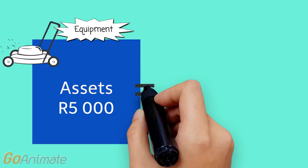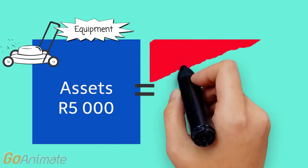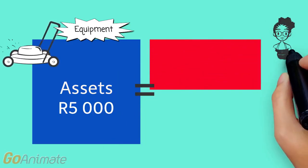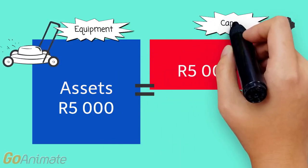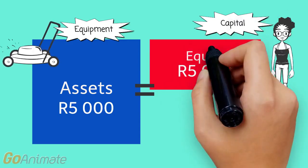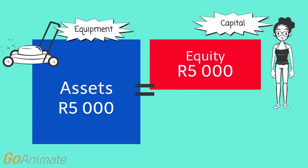Nandi used her own money to buy the lawn mower. In the business we call this capital — it's the first part of equity. We'll show you other parts of equity later. She's the owner of the business, and this is her investment of 5,000 rand in her business.